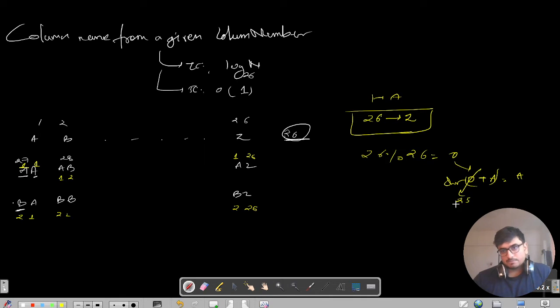That means before applying modular operator we need n minus minus. So that means it makes 25, then again modular with 26, and now it will give me 25, and now I will plus A here.